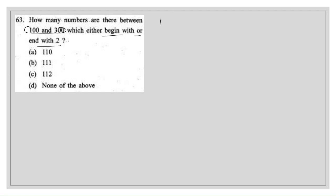From 100 to 199, we look for numbers ending with 2. There is only one digit option for the units place (which is 2), and 10 options for the tens place (0–9), giving 10 numbers. No number in this range starts with 2, since we're looking at numbers before 200.